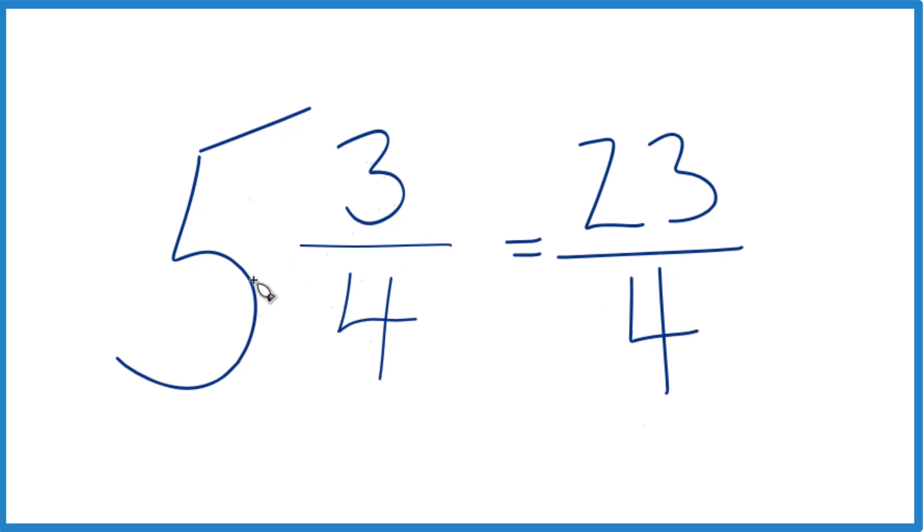Let's do it again. 5 times 4, 20, 20 plus 3, 23, that's the numerator, bring the 4 across.